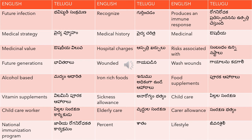Future generations is 'bhavi taralu'. Wounded is 'gaya padina'. Wash wounds — for example, you have to wash your wounds so that they don't get contaminated — uses 'gaya padina' for wounds.